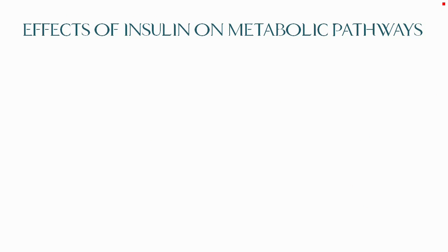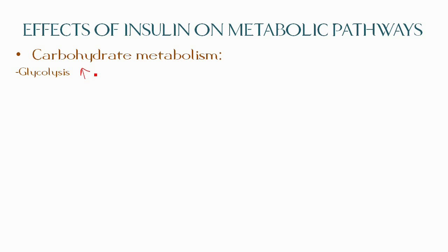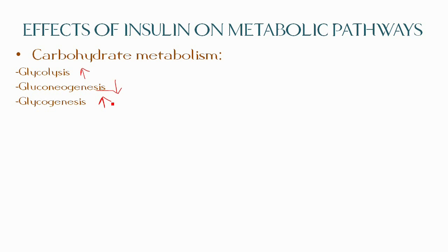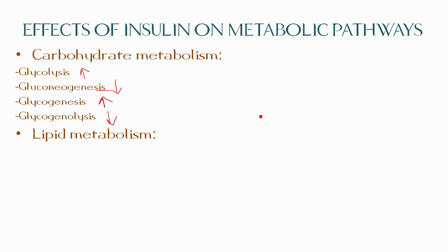The pathways of carbohydrate metabolism are affected by insulin: glycolysis is increased, meaning more glucose is metabolized through glycolysis in muscle and liver; gluconeogenesis is decreased, preventing glucose synthesis by suppressing key enzymes; glycogenesis is increased, leading to conversion of glucose to glycogen as a storage form; and glycogenolysis is decreased, preventing glycogen from breaking down to yield glucose.